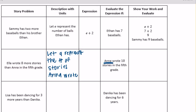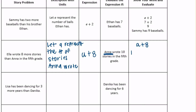So the number of stories that Anna wrote plus 8 would be equal to Ella. So if Anna plus 8 is equal to Ella, and Anna wrote 10, we can replace that with 10 plus 8 is equal to 18. So Ella wrote 18 stories in fifth grade.